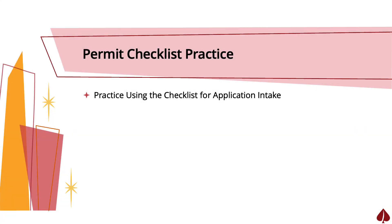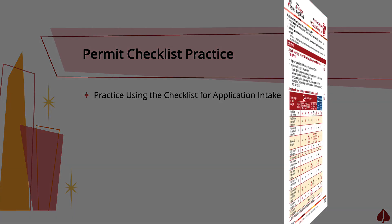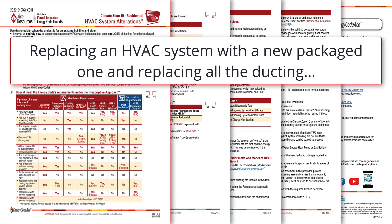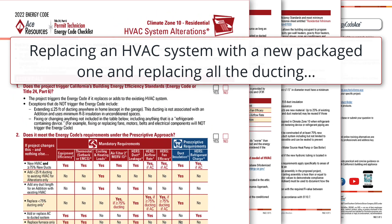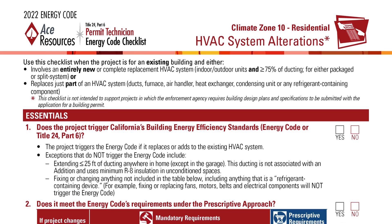Now that you've seen how these checklists are structured, let's practice using them for quick reference during application intake. We'll stick with our HVAC checklist and return to the high-level summary of this topic on page one. A permit applicant is looking to replace her HVAC system with a new packaged one and will also replace all the ducting. This is the only change she is making in her home. We'll zoom in to look at part one of this page.